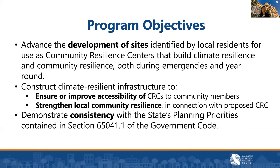Additional program objectives include constructing climate-resilient infrastructure to ensure or improve accessibility of CRCs to community members, and demonstrating consistency with the state's planning priorities in Section 65041.1 of Government Code — promoting equity, strengthening the economy, protecting the environment, and promoting public health and safety. There is broad eligibility for applicants and facility types. CRCs will serve as resilience centers both during climate or emergency events and year-round. Examples of existing community-serving locations include schools, libraries, community centers, cultural centers, youth and senior centers, health clinics, places of worship, community colleges, food banks, and many more.